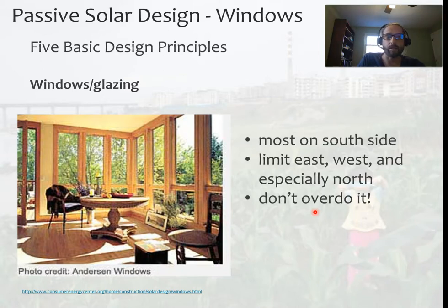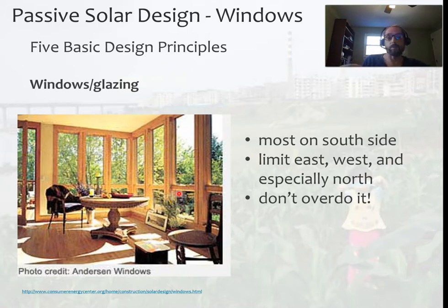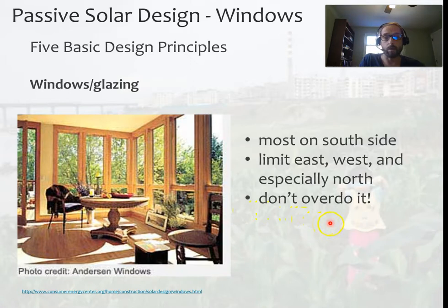Don't overdo the windows. There's not a lot of use having many windows on the east and west side for the main part of the house you're trying to heat. By having those windows on the east, west, and north sides, you rarely get direct sunlight. So you want to minimize window area on the east, west, and particularly the north side.